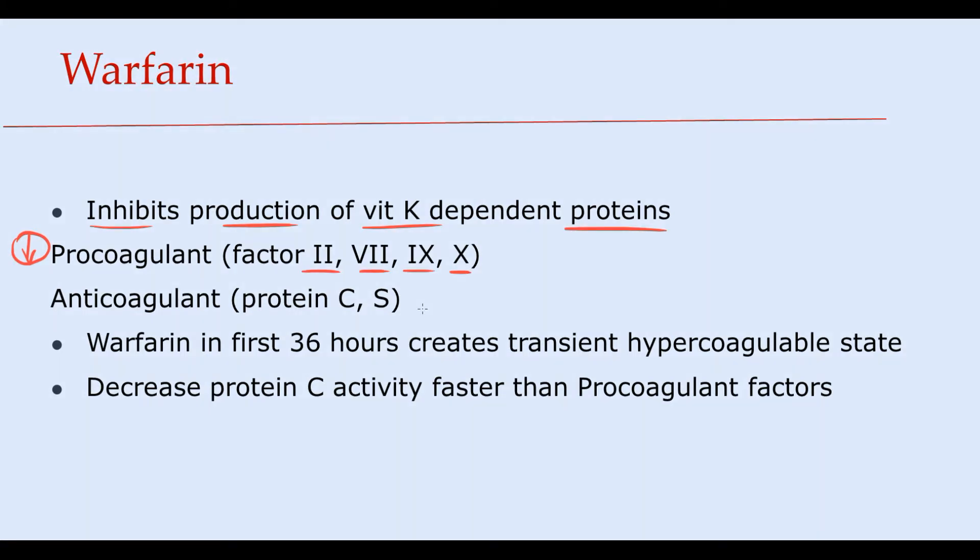But also warfarin inhibits production of natural anticoagulant proteins such as protein C and protein S. The function of protein C is to neutralize factors 5 and 8, and protein C also increases the rate of fibrinolysis. Protein S functions as a cofactor of protein C. So these two proteins function as antagonists to procoagulant factors, and by this they keep the coagulation system in balance.